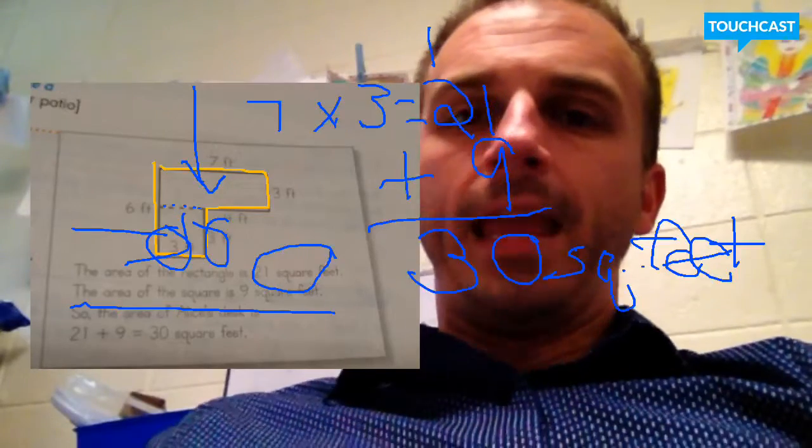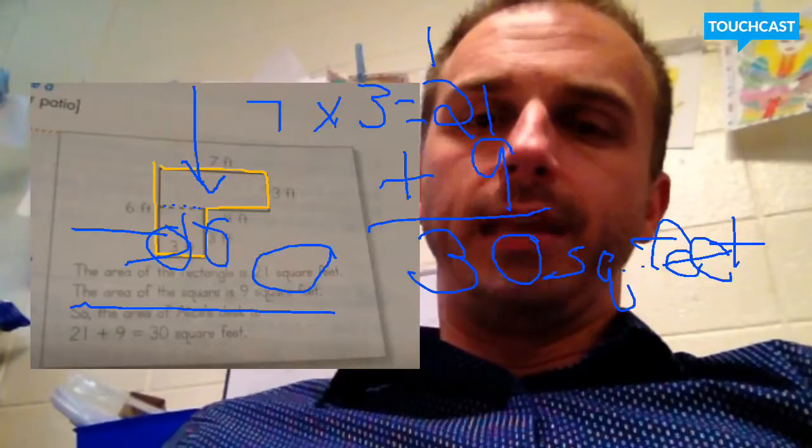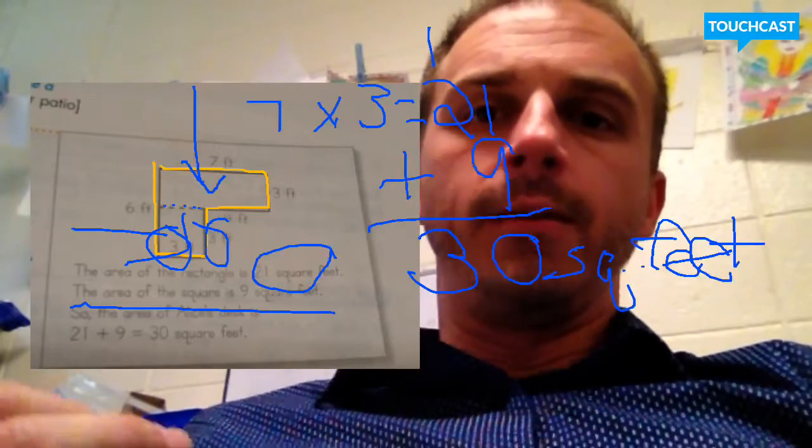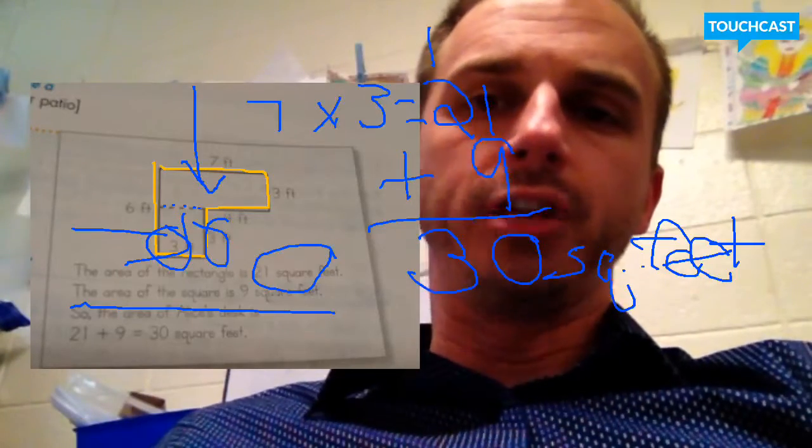30 square feet. And so when you find the irregular shape, the easy way to do it is to see what shapes are combining to make that irregular shape.